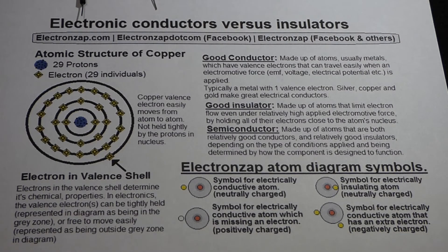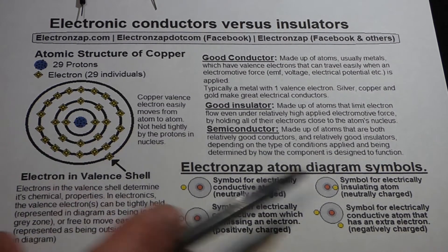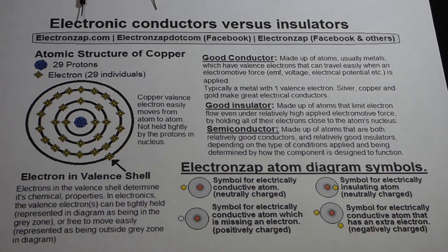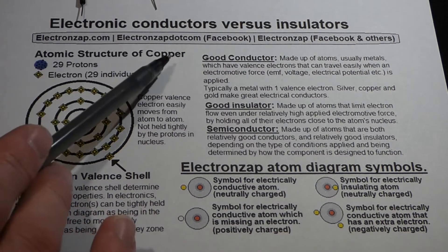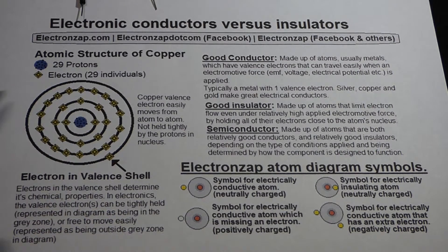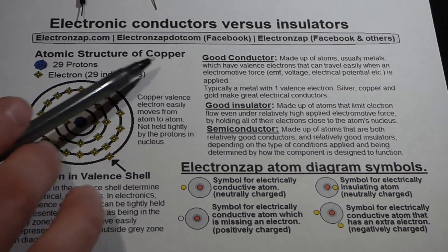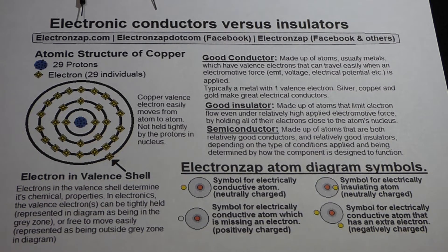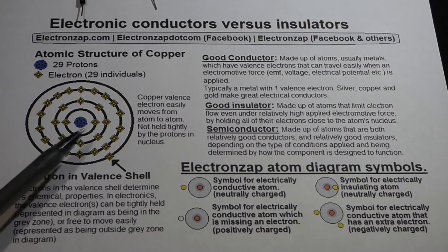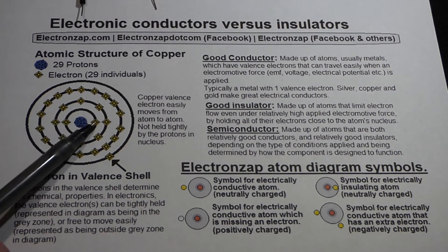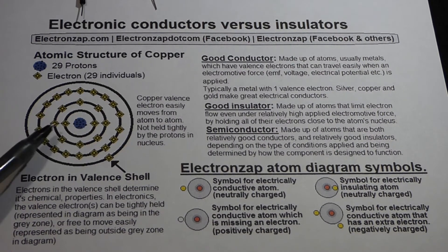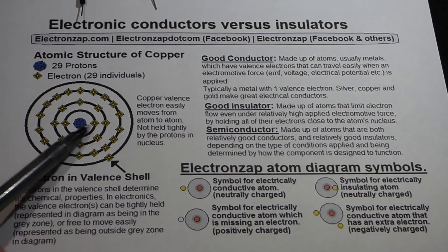In this video we're going to talk about what makes a good electrical conductor. I put this diagram together showing the atomic structure of copper. The number of protons in the nucleus determines what an element is, so copper has 29 protons. Each proton attracts an electron, and the first two electrons form the first shell, which can only hold two electrons.